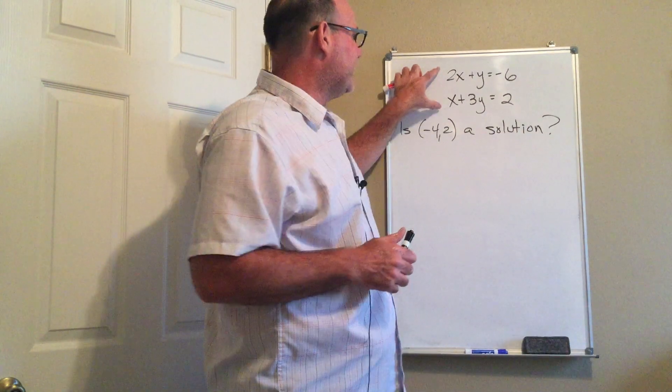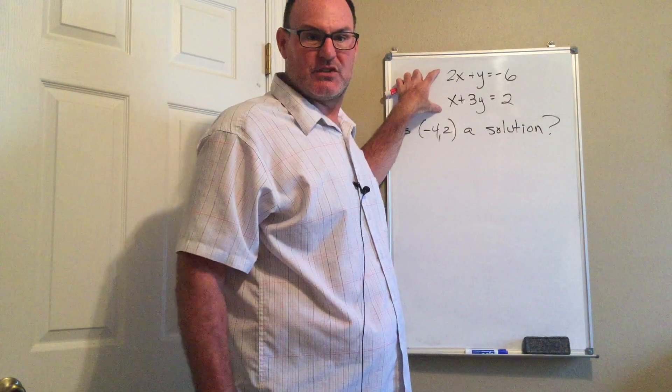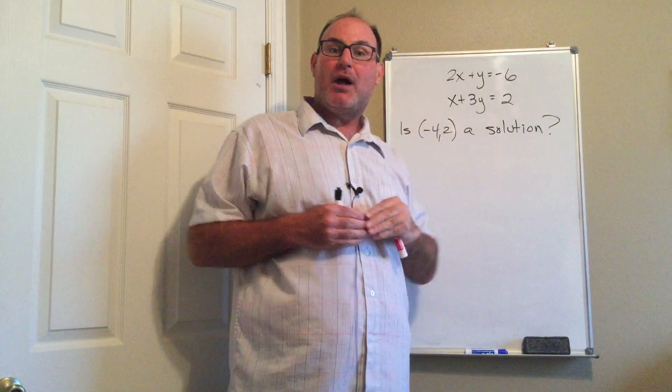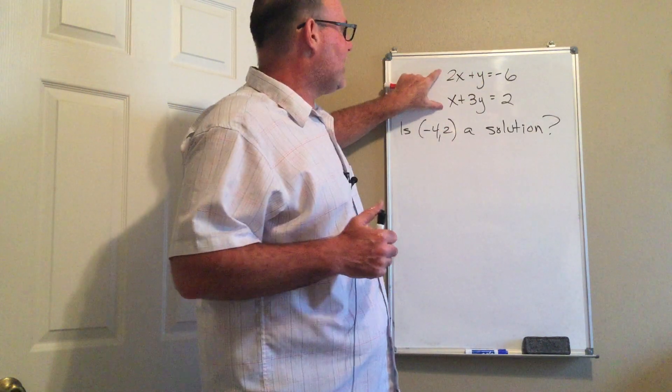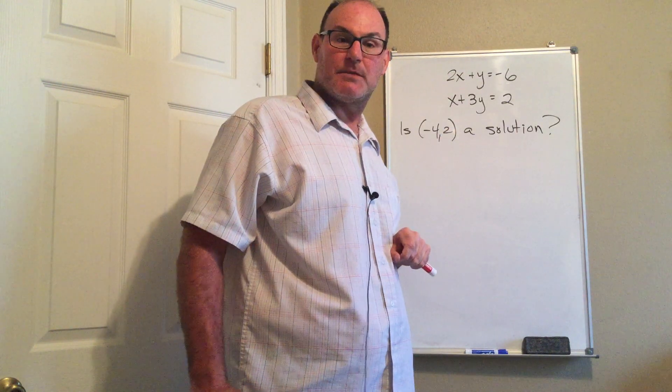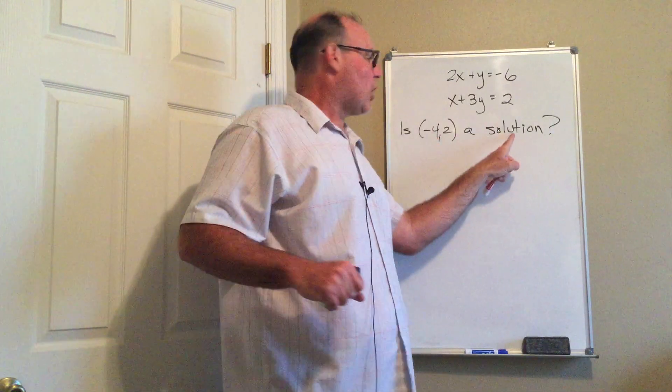What I have here is called a system of equations. When I have two linear equations together, what I want to know is if there is an ordered pair, meaning an x and a y value, that satisfies both equations. When there is, we have what's called a solution.